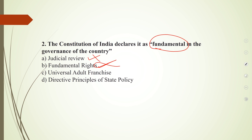The correct option is Directive Principles of State Policy. DPSP is non-enforceable in courts. It is a moral and political obligation to implement — not a constitutional obligation. It basically provides a direction to the government on how we want to run the country.